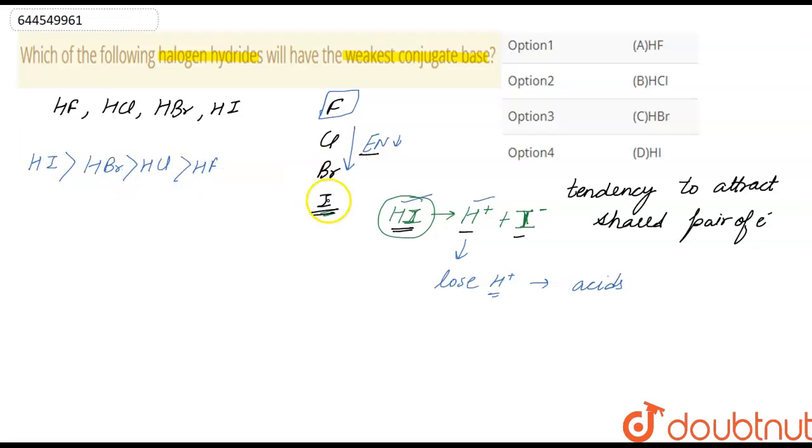Because the electronegativity of bromine is more than iodine, and electronegativity of bromine is less than chlorine, and same for fluorine and chlorine. That is why this is our acidic order.